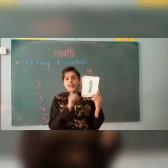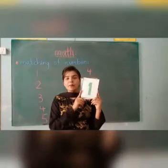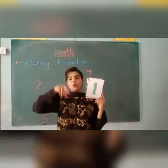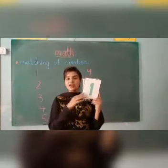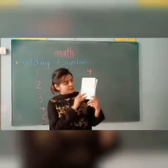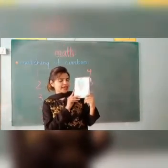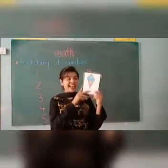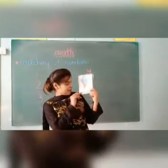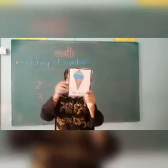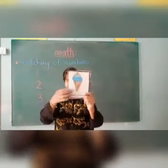Which number is this, kids? It is number 1. Number 1 — 1 is down and down. Well done! What is this at the back? I think it is a yummy, yummy ice cream. Yes, it is a little ice cream. One ice cream. Well done, good job!